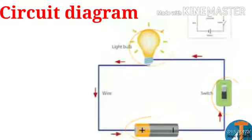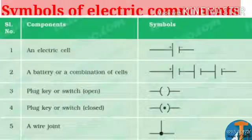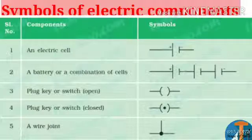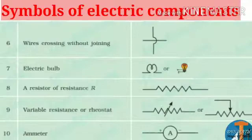Now let us consider a simple electric circuit diagram which consists of a cell, battery, plug key, electrical components, and connecting wires. We have so many components in the circuit diagram. Let us learn the symbols of some electric components. Number 1: an electric cell with positive and negative terminals. Number 2: battery, or combination of cells. Number 3: plug key or switch, here it is open switch. Number 4: closed switch. Number 5: wire joint.